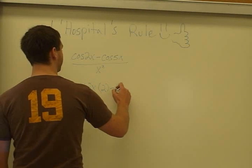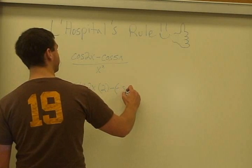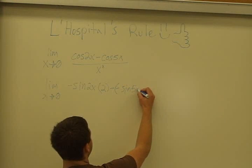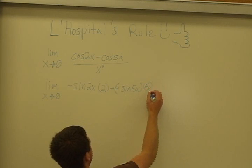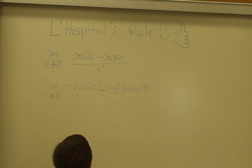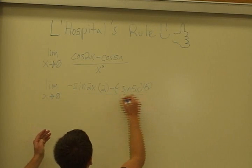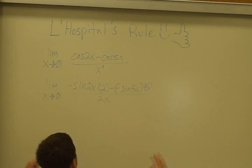And we're going to subtract that by negative sine 5x. And then once again, we're going to pull that 5 out over here for the chain rule. And what happens, this is all over 2x. Bam, that's what happens.